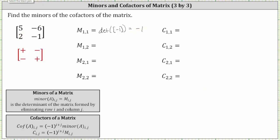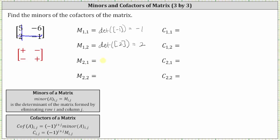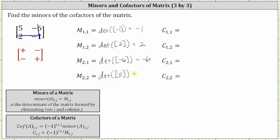Minor one comma two is equal to the determinant of the matrix after eliminating row one and column two. Minor one comma two is equal to the determinant of the one by one matrix with an entry of two, which is equal to positive two. Minor two comma one is equal to the determinant of the matrix formed after eliminating row two and column one. Minor two comma two is equal to the determinant of the matrix formed after eliminating row two and column two — the one by one matrix with an entry of five — which is equal to five.